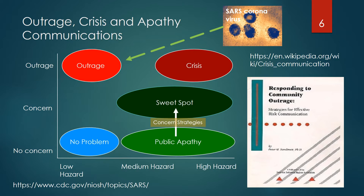SARS stands for Severe Acute Respiratory Syndrome. This infection caused an epidemic from November 2002 to July 2003. SARS was caused by a coronavirus and caused 8,098 symptomatic infections and resulted in 774 deaths worldwide in 37 countries, with a majority of cases in China. The case fatality rate was 9.6%. No cases have been reported worldwide since 2004. The primary route of transmission was by contact with mucous membranes or via respiratory droplets. There were no effective antivirals, leaving the only treatment as supportive care. SARS caused a lot of public concern to the point of outrage, yet the actual risk to the general public was quite low.